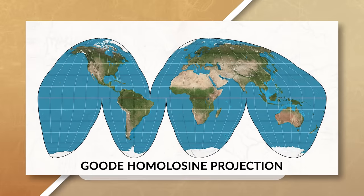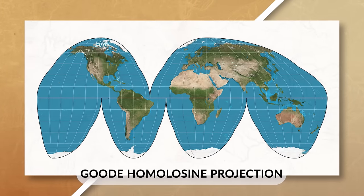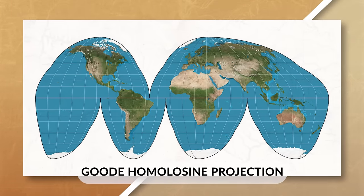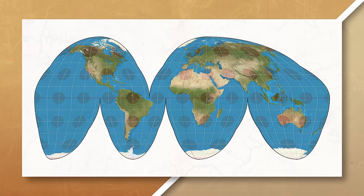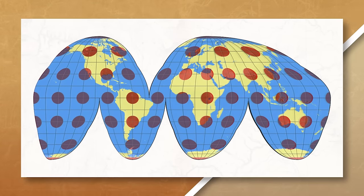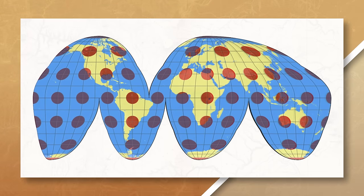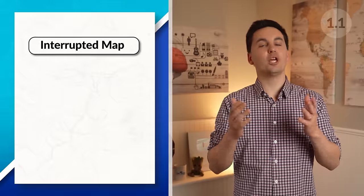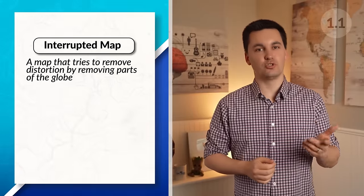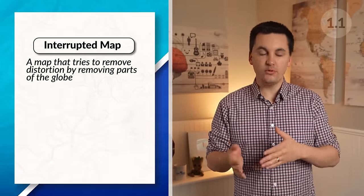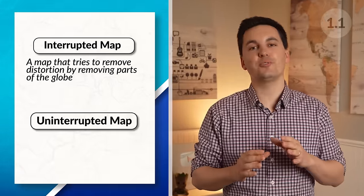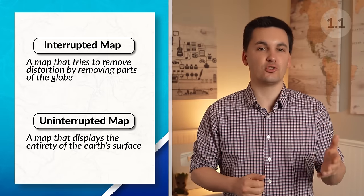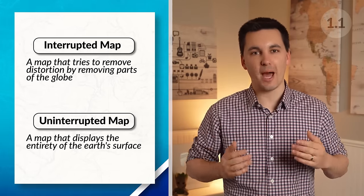The Goode's Homolosine projection is an equal area pseudo-cylindrical projection. It does a great job at showing the true size and shape of land masses, but has distortion in distances near the edges of the map and is not helpful for direction since it is an interrupted map. Interrupted maps try to remove distortion by removing parts of the globe, while uninterrupted maps do not remove any parts of the globe, which may cause more distortion in some areas.